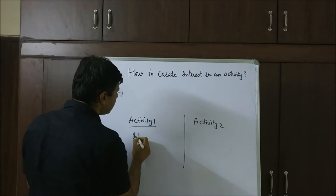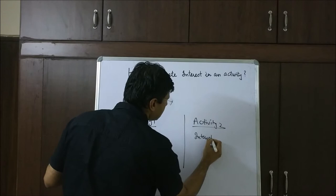Activity 1 is the activity where you already have interest. Activity 2 is where interest has to be created.